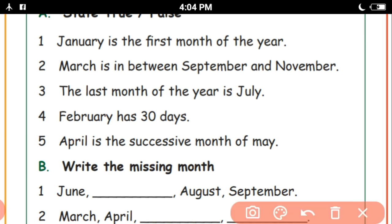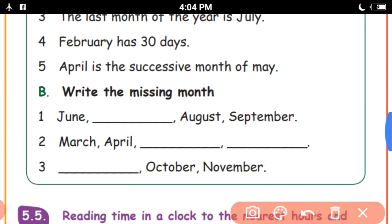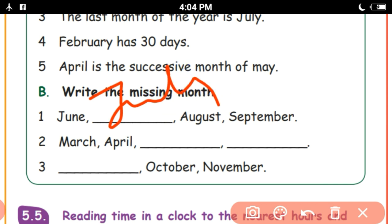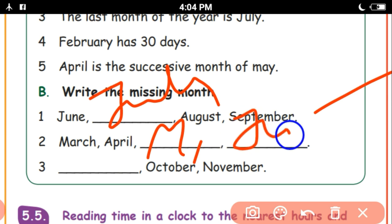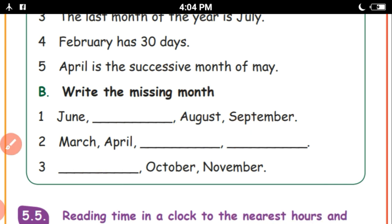Next, write the missing month. June, July, August, September. March, April, May, June. September, October, November.